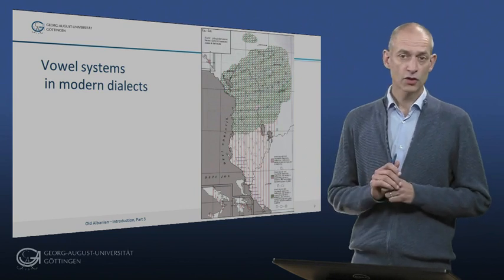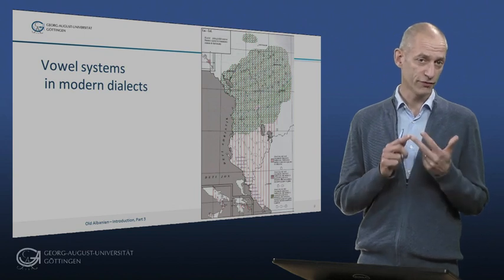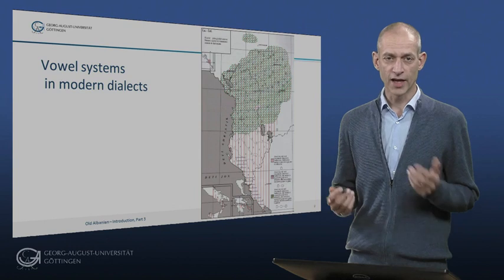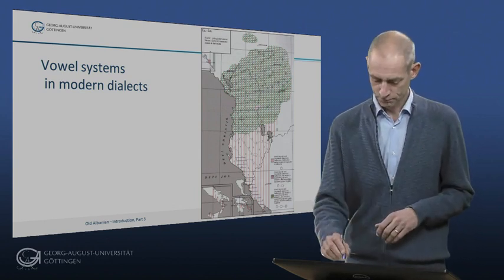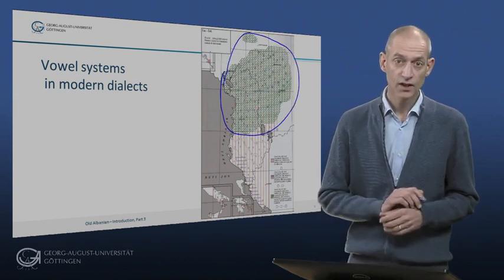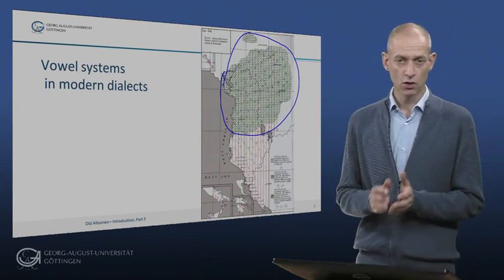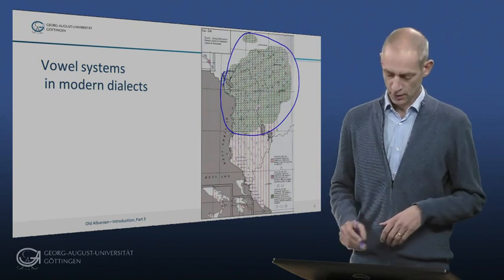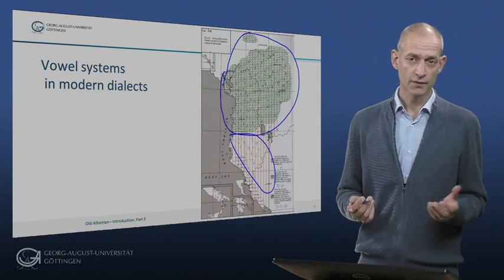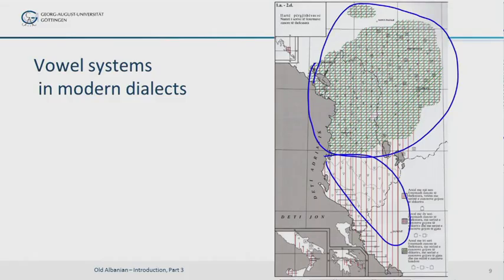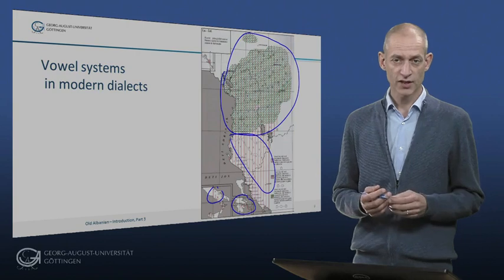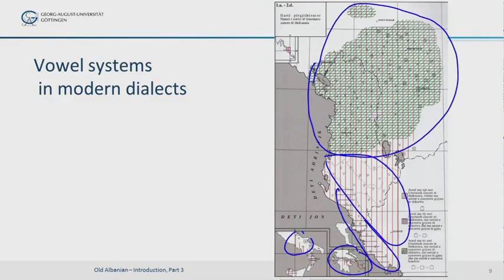The map you see now shows whether the different Albanian dialects possess one, two or three different series of vowels. It clearly shows that only the GEG area — and all of the GEG area — possesses the three series of short oral, long oral and nasal phonemic vowels. In the vertically hatched area, which encompasses most of TOSC, including also Arvanitic and part of Arbëreshë, there is only one series of vowels, namely short oral vowels. In the cross-hatched area along the southern Albanian coast, as well as in Calabria and Sicily, we find a series of short oral vowels which contrasts with long oral vowels.